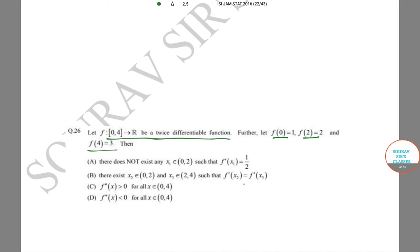x₃ belongs to (2,4) such that f'(x₂) = f'(x₃); (C) f''(x) > 0; and (D) f''(x) < 0. These are the four options that we have. So firstly, if